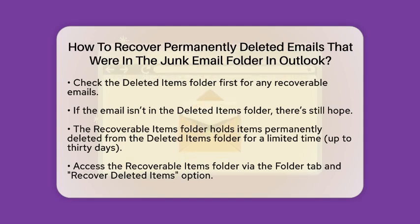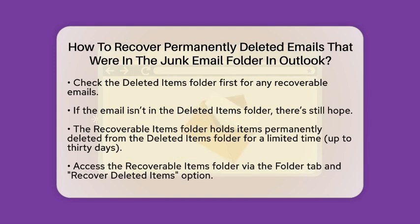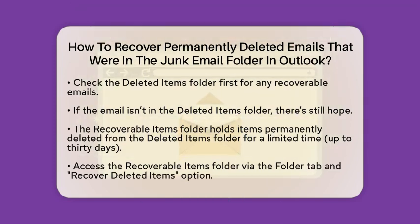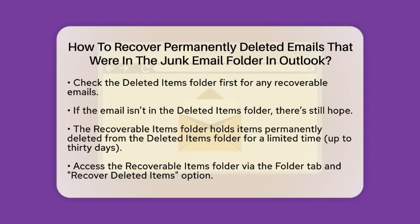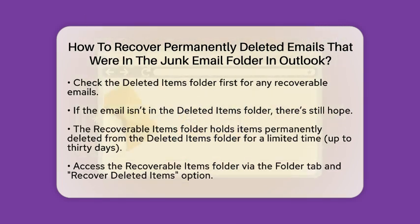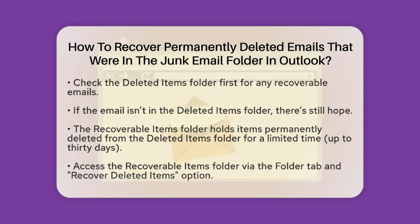If you do not see the email in the Deleted Items Folder, don't worry just yet. Outlook has a feature called the Recoverable Items Folder, available for Outlook Desktop and Exchange Online Accounts. It holds items permanently deleted from the Deleted Items Folder for up to 30 days. To access this folder, go to the Folder tab in Outlook, click on Recover Deleted Items, and look for the email you want to restore.